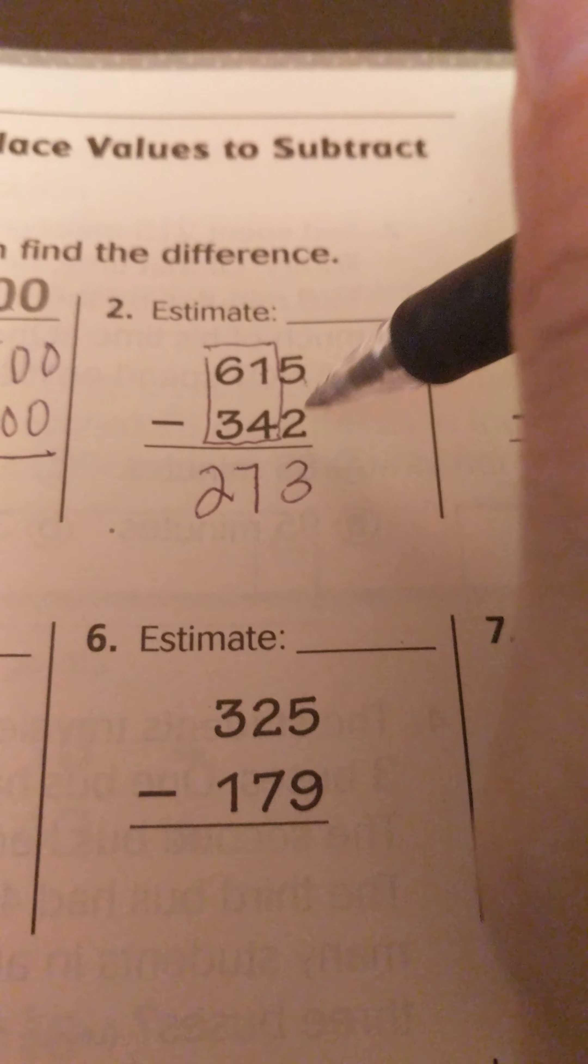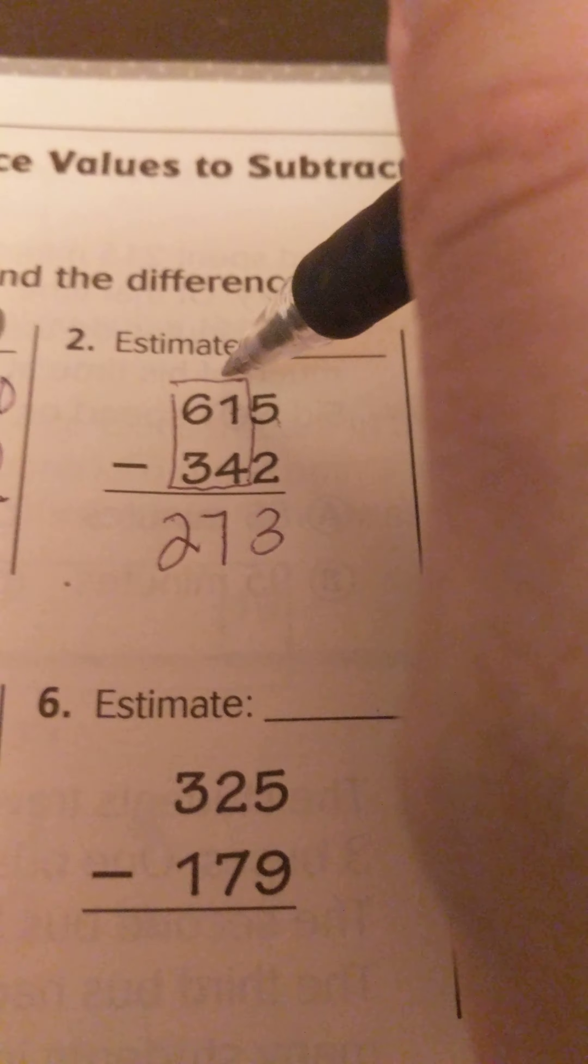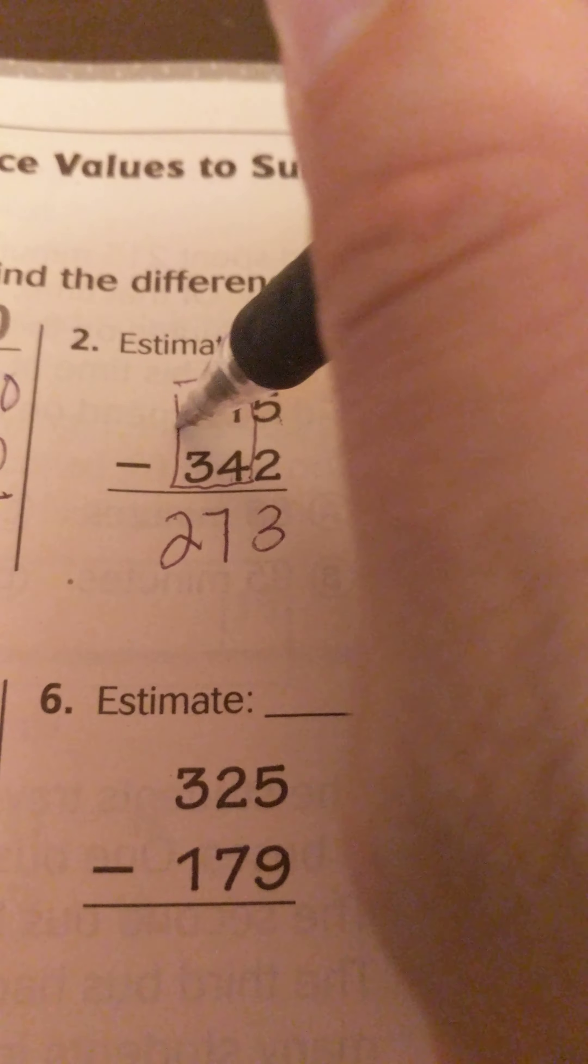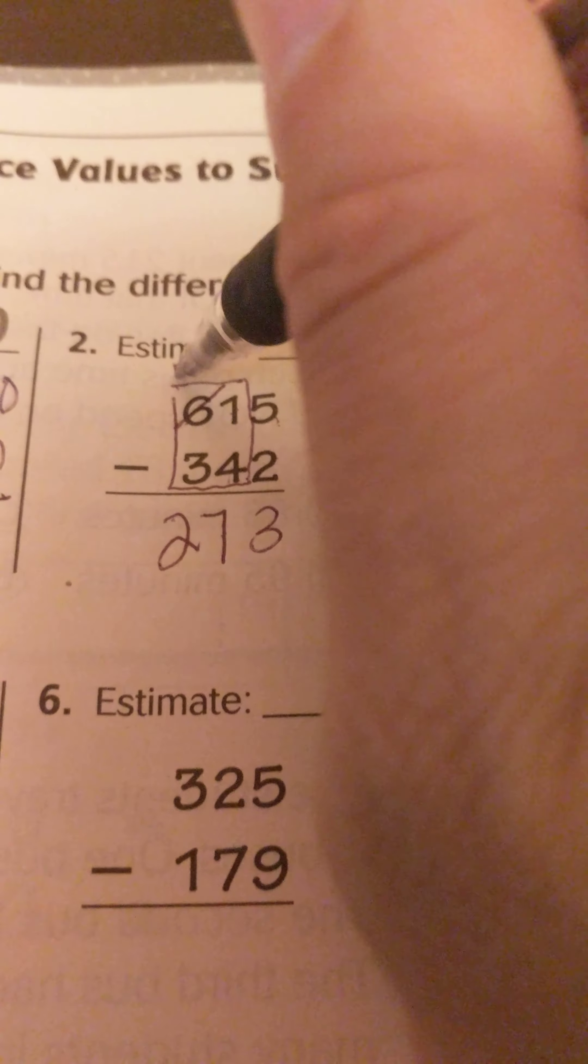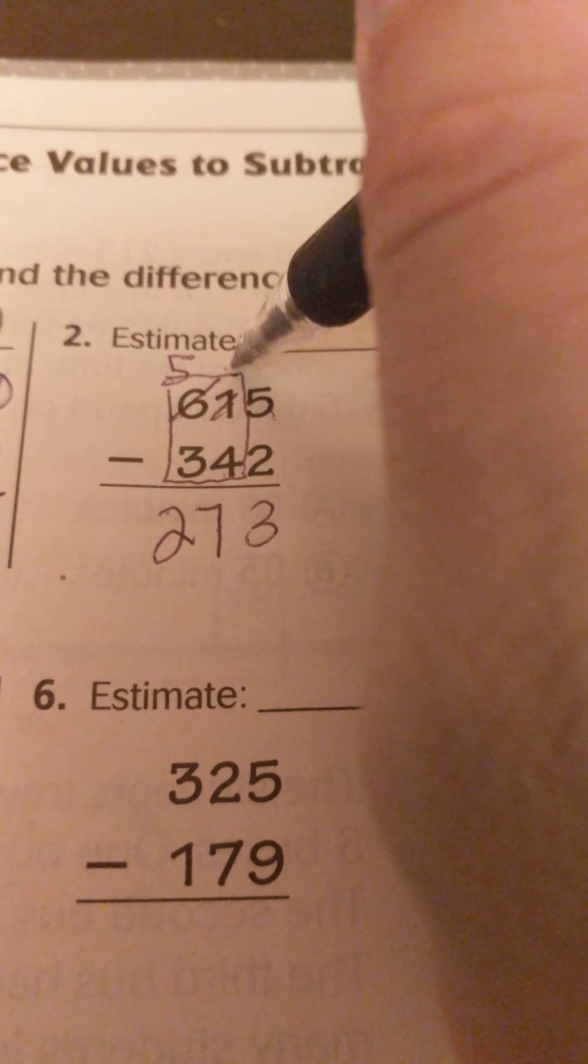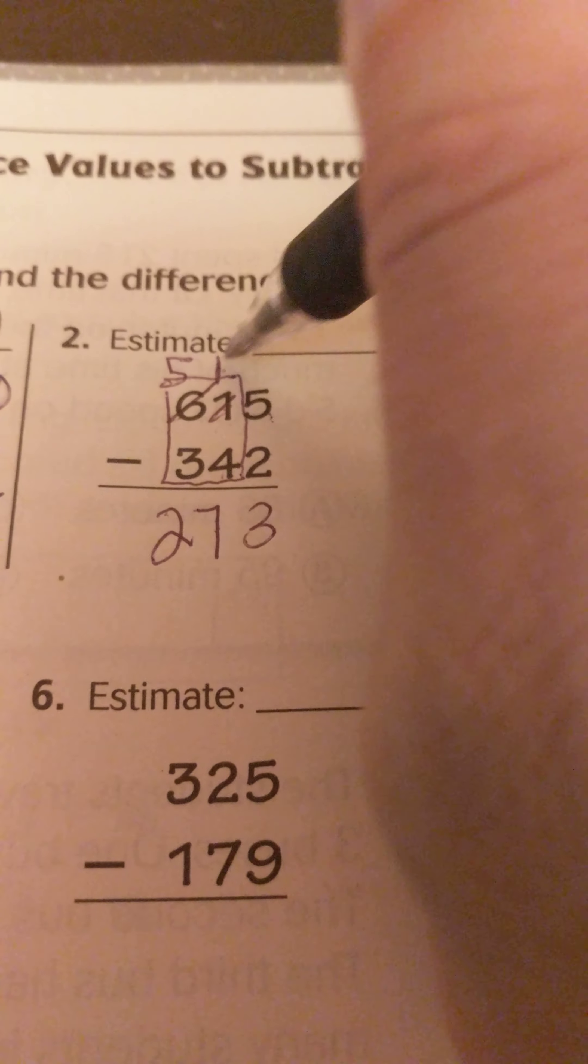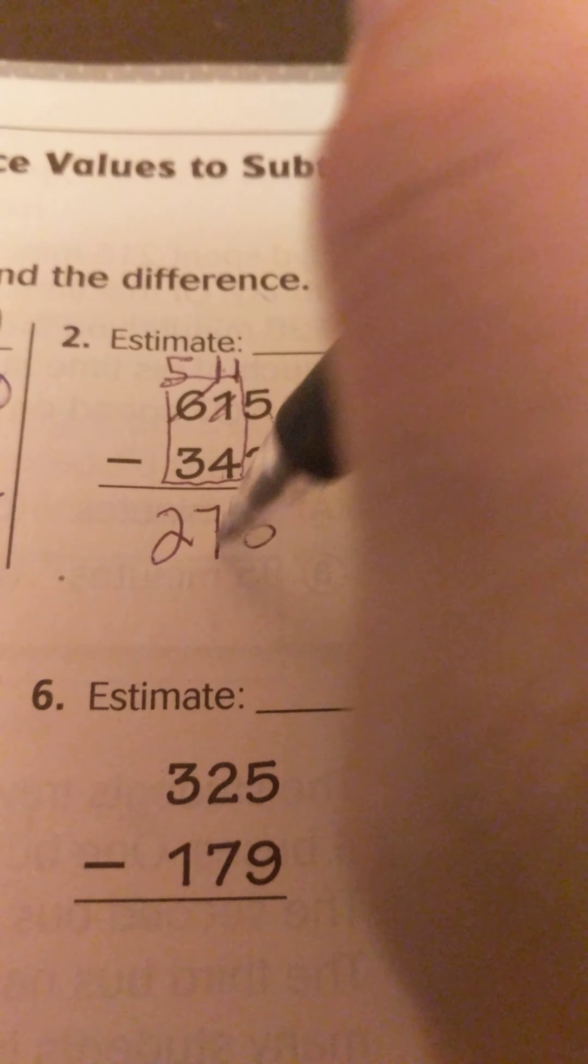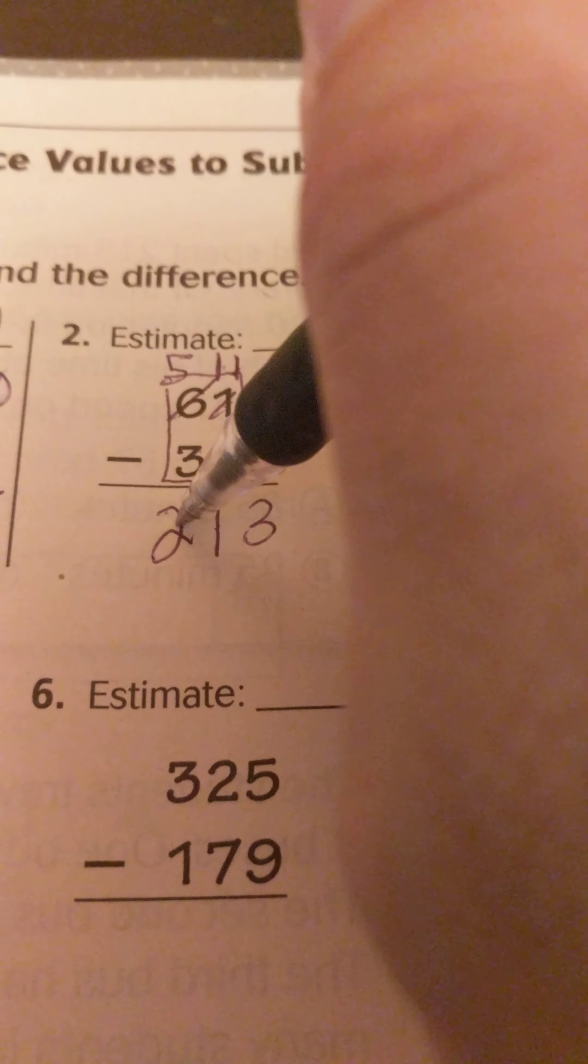Now I'm also going to show you by regrouping. So I can't subtract here. So I regroup to the hundreds. Take a hundred. Add 10 tens to here. So this would be 11. 11 minus 4 is 7. 5 minus 3 is 2.